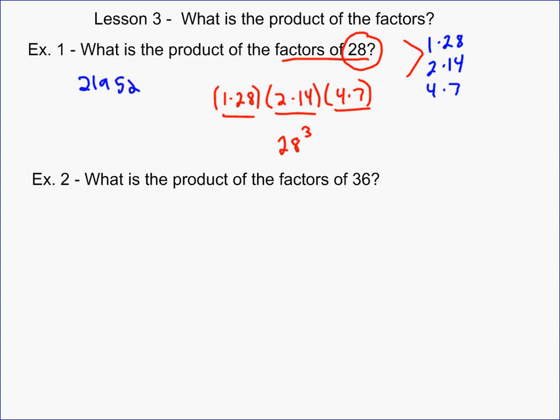Well, I said always, and that's actually not true. It's most of the time because occasionally you run into a situation like this one. When you're doing the product of factors, you always first find the number of factors. So I do my prime factorization of 36, which is going to give me 2 squared times 3 squared. And that's going to, when you add one to each of these, give you 9 factors. So 36 has 9 factors. And so I can't do 36 to the 4 halves.